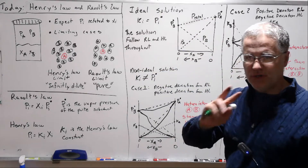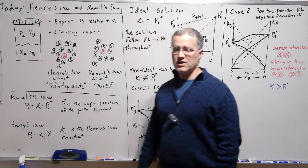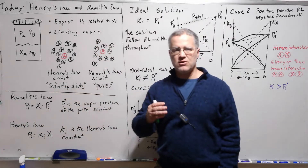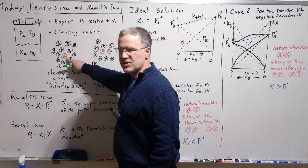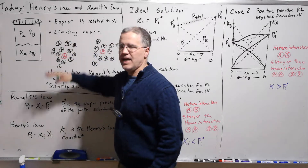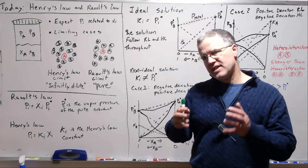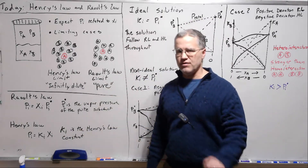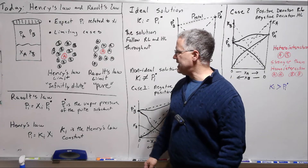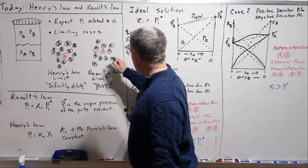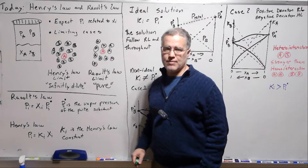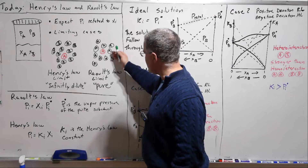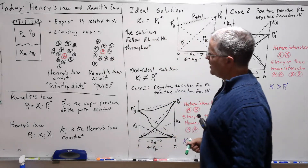Let's look at two limiting cases — one is the basis for Henry's law and the other is the basis for Raoult's law. The Henry's law limit is the infinitely dilute limit: if we're thinking about some generic molecule A, then all surrounding A is B. We're taking the limit of zero mole fraction A, mole fraction 1 of B. The other limit is the pure case: the limit as mole fraction goes to 1 for A, where all the other molecules around A are also A.